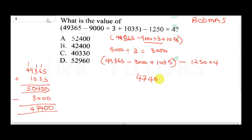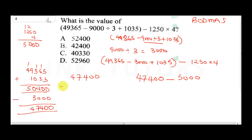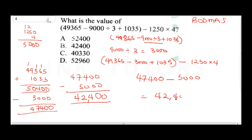Continuing, 50400 minus 3000 gives 47400. Outside the bracket we have 47400 minus 1250 times 4. Multiplying: 1250 times 4 equals 5000. Finally, 47400 minus 5000 equals 42,400. To get this type of question right you must follow the BODMAS rule.